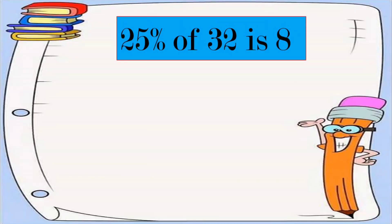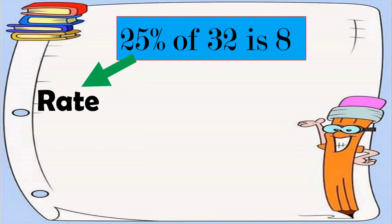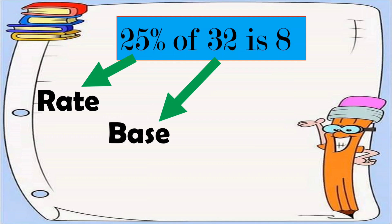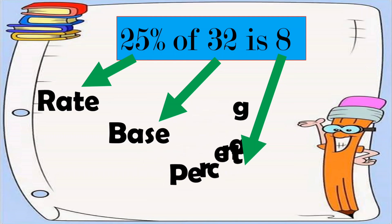Let's study the following illustrations. Twenty-five percent of 32 is 8. Twenty-five percent has a percent sign and it is the percent of the whole. Therefore, twenty-five percent is our rate. Thirty-two is written after the word 'of' and it is the number that represents the whole, so thirty-two is our base. Eight follows after the word 'is' and it is the number that represents a part of a whole, so eight is our percentage.